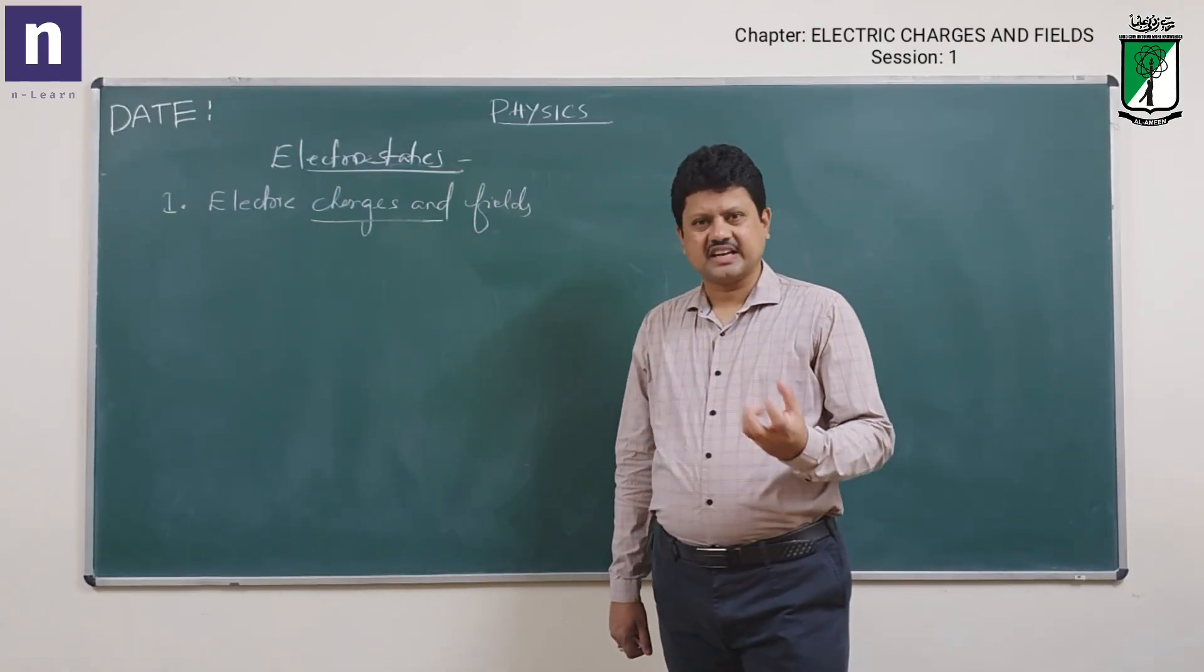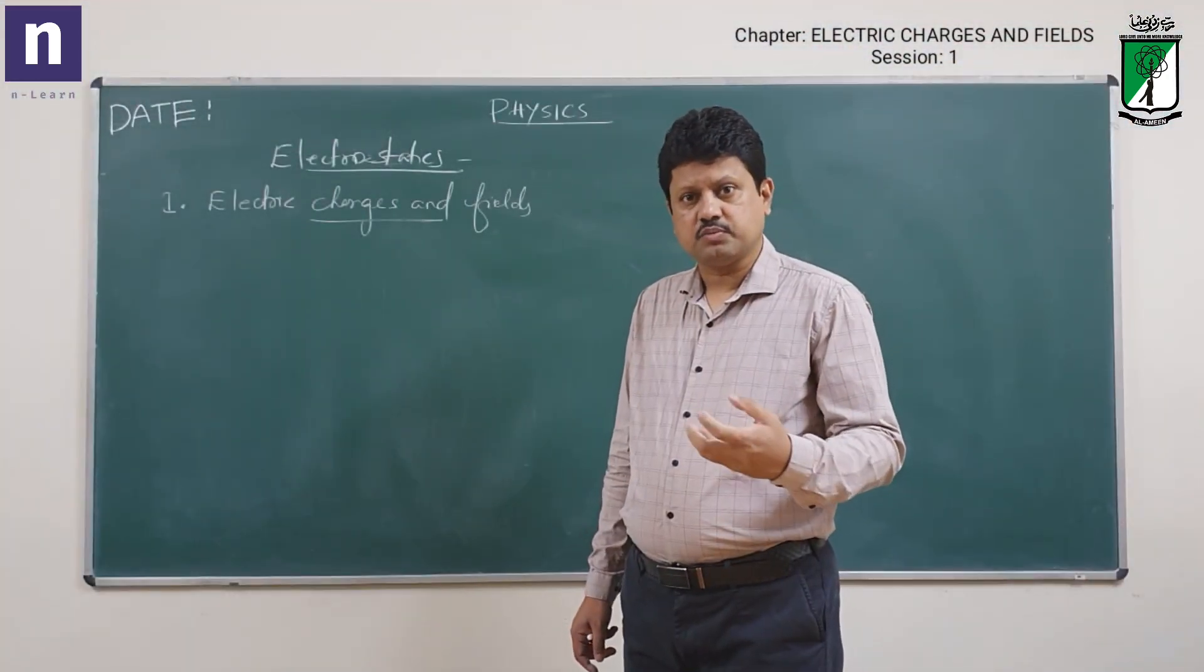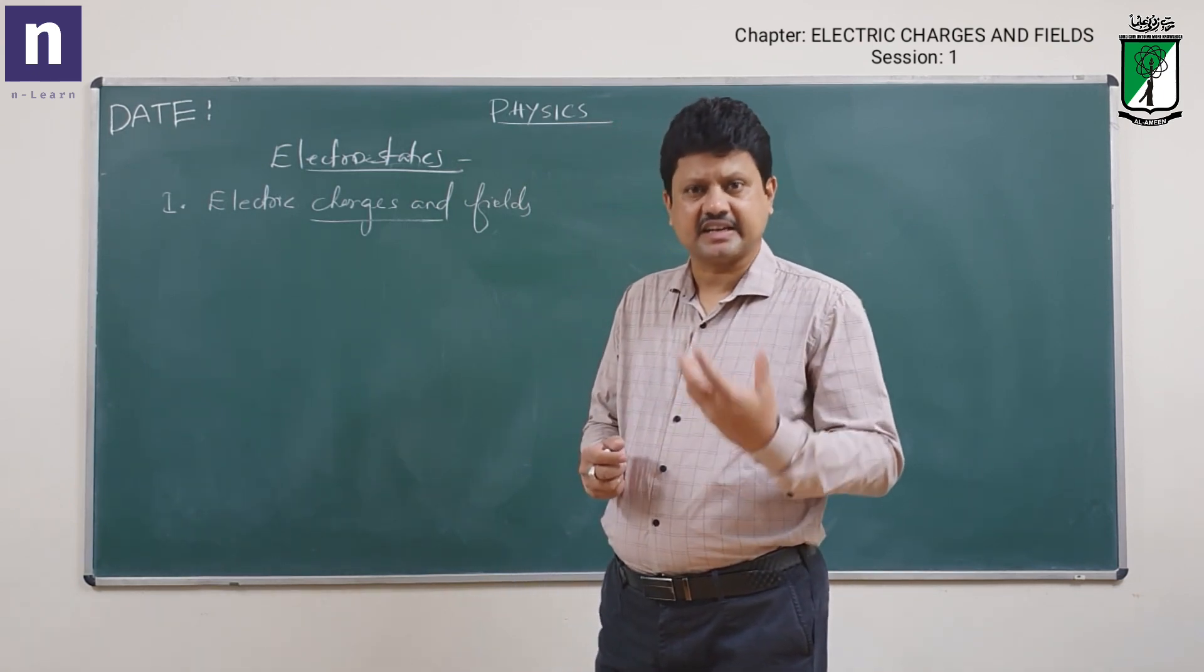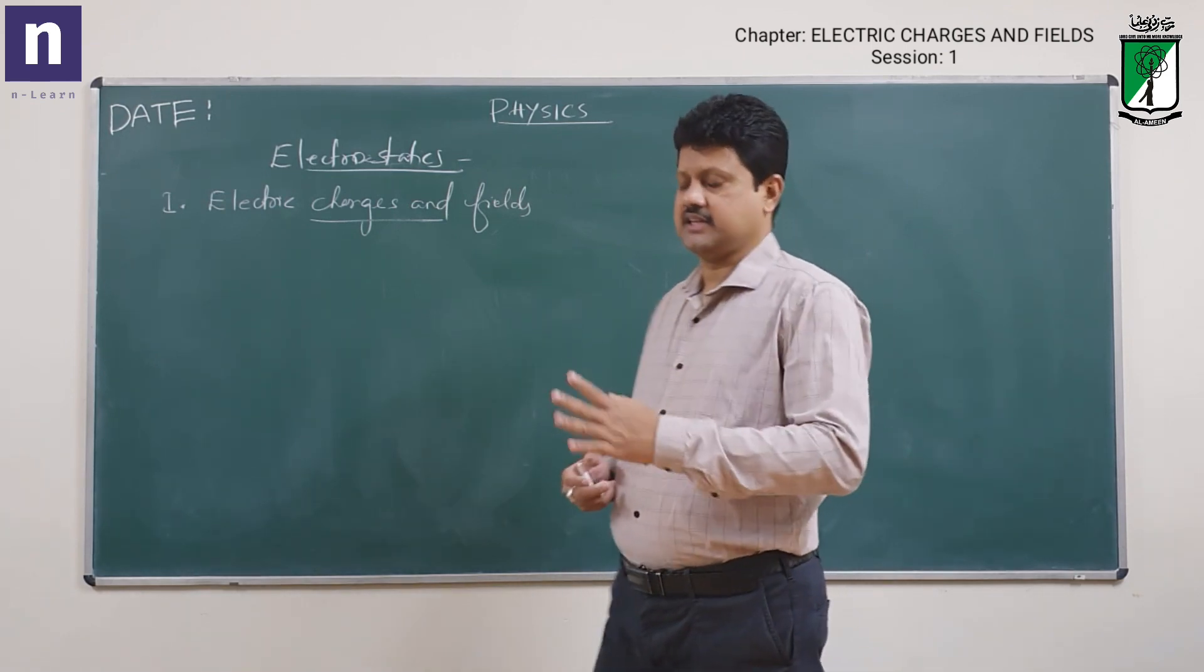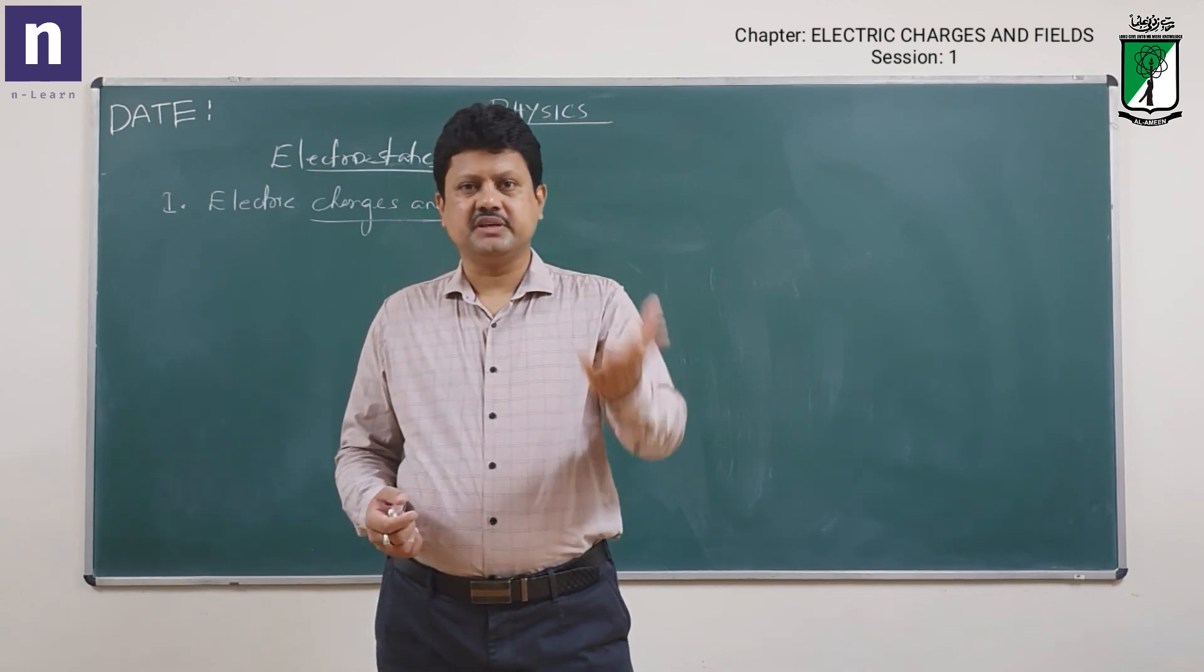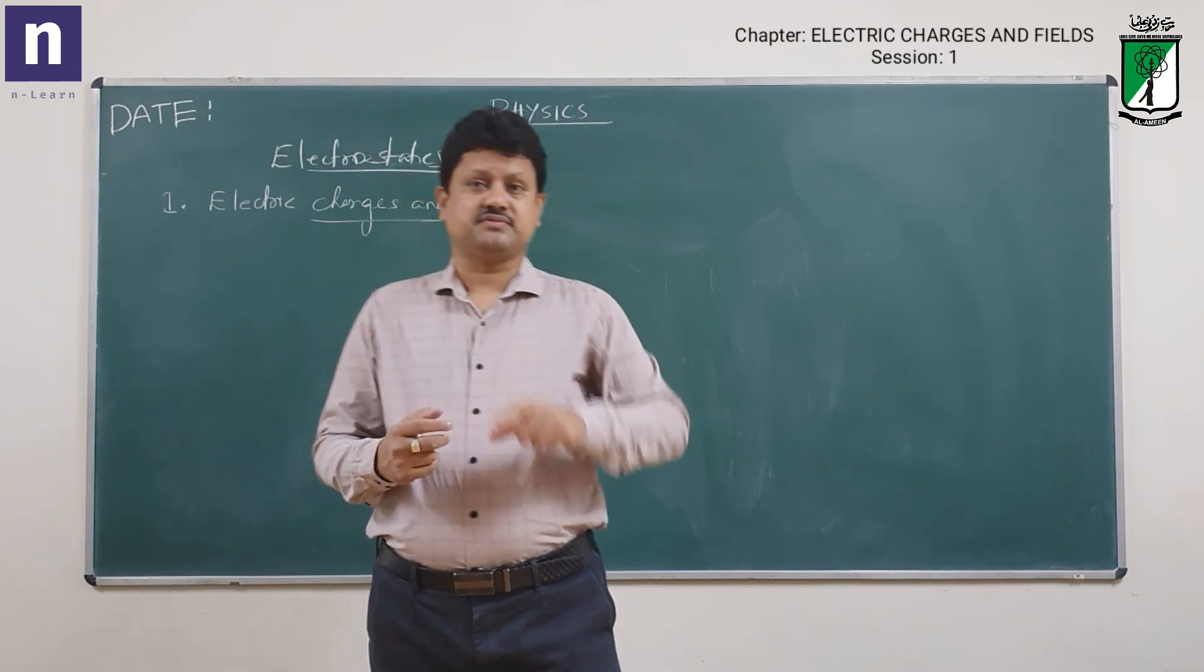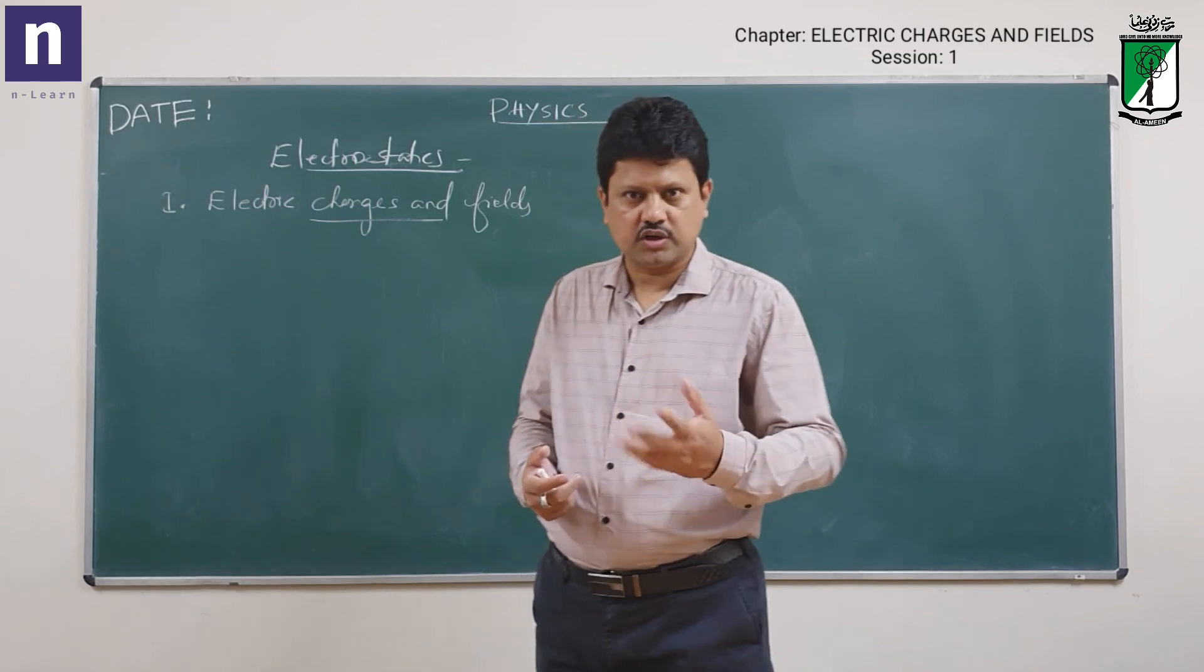Electric charge is a basic characteristic, an intrinsic property of a body. Just like mass, charge is also an intrinsic characteristic. You cannot actually define what is a charge. It is just an intrinsic property. You can experience the effects of the existence of the charge, but you cannot actually define what is a charge or what it is consisting of.